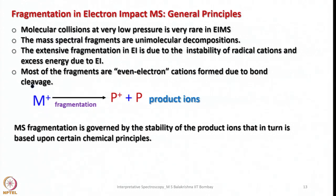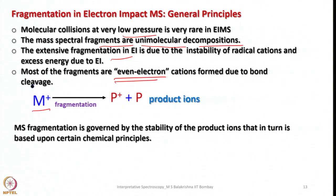Now let us look into the general principles involved in the fragmentation of ions in electron impact mass spectrometry. Molecular collisions at very low pressure are very rare. Mass spectral fragments are unimolecular decompositions. Extensive fragmentation in electron impact is due to the instability of radical cations and excess energy, and most fragments are even-electron cations formed due to bond cleavage. MS fragmentation is governed by the stability of product ions based on certain chemical principles.